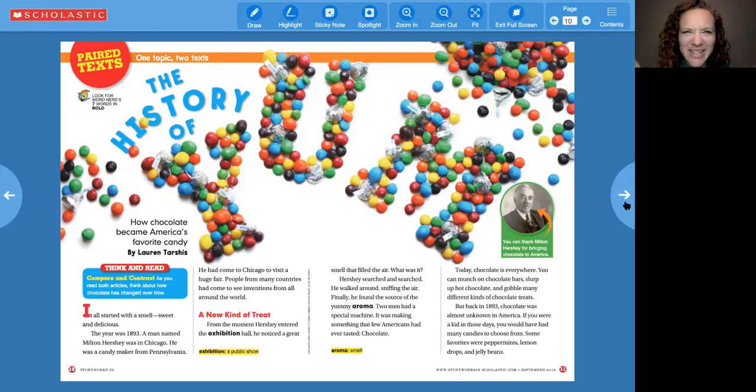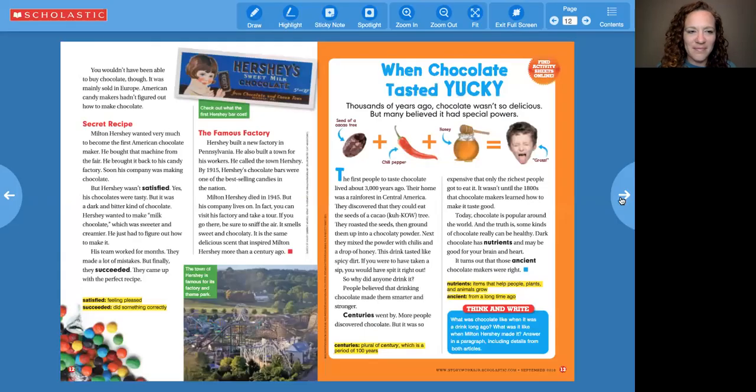Can you imagine a world where you hadn't tasted chocolate? That's crazy. But it is telling me about some true facts that happened in 1893. When I read nonfiction like this, I like to take breaks after the paragraphs and see how many things I can remember. It's like a game. So for example, if I pause right here, I would think he was at an expedition. His name, his last name was Milton. In 1893, people had not tasted chocolate. He was sniffing the air. I came up with four things. Then I can read it again and see how many things I can remember. So that's a great reading strategy to try.